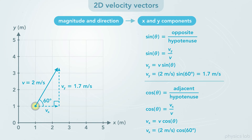We can do the same thing for the x component, but using cosine instead of sine, because the x component is adjacent to the angle that we're using. When we do that, we find that vx is 1 meter per second. Remember, we use sine for the component that's opposite from the angle, and cosine for the one that's adjacent to the angle. If we were given the other angle, then vx would use sine, and vy would use cosine.